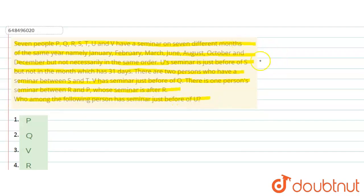So, yahan pe months hai. Months are January, then February, and then March, then June, and then August, and then October, and then December. So, number of days dekho: January me 31, February me ya to 28 ya to 29, March me aapke pas 31, June me 30, and August me 31, October me 31, and December me 31.